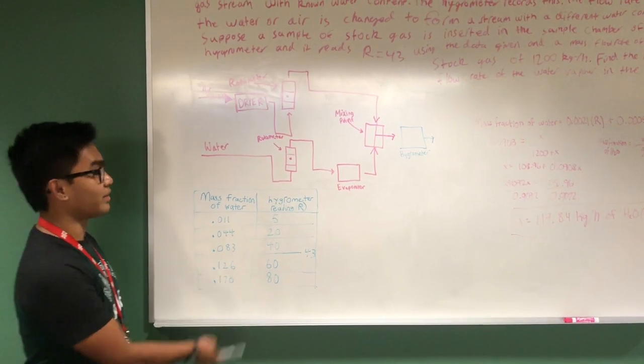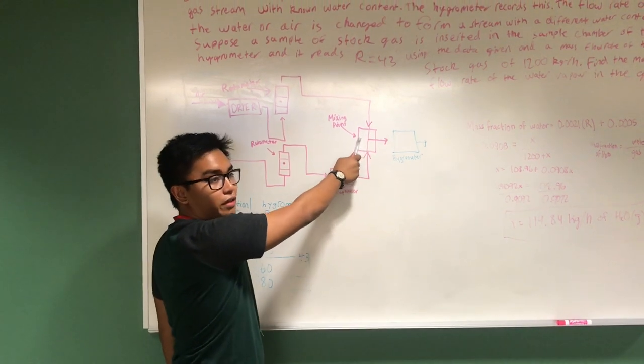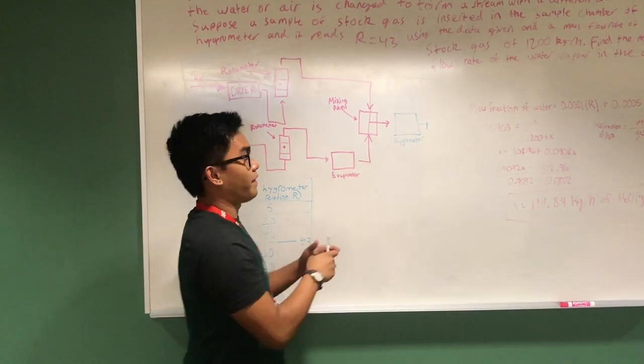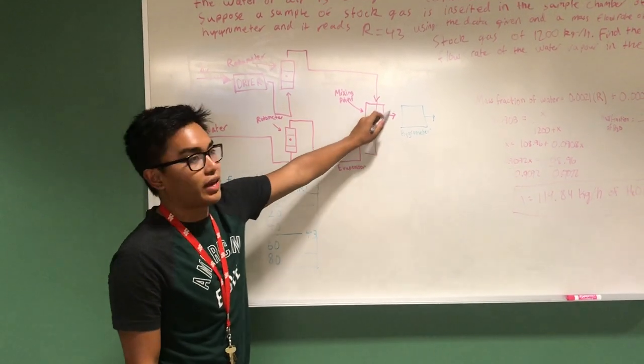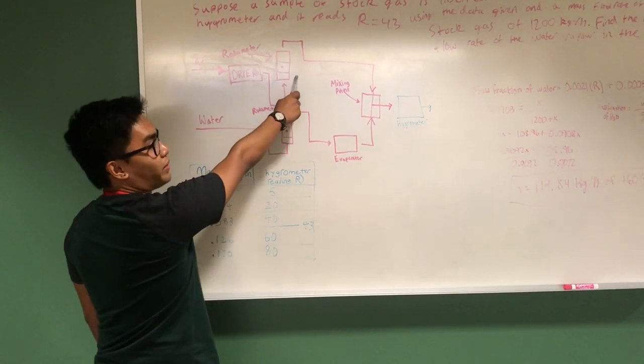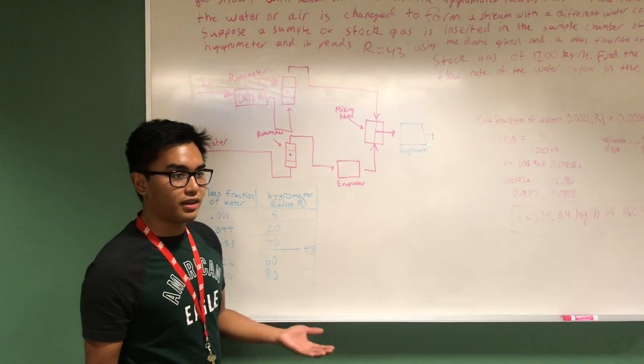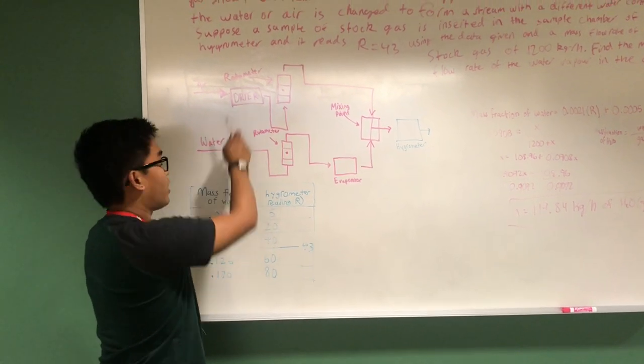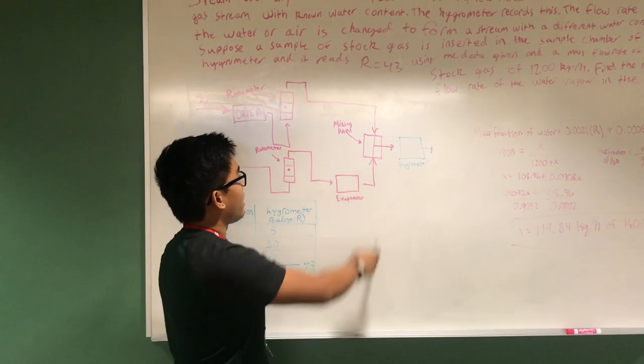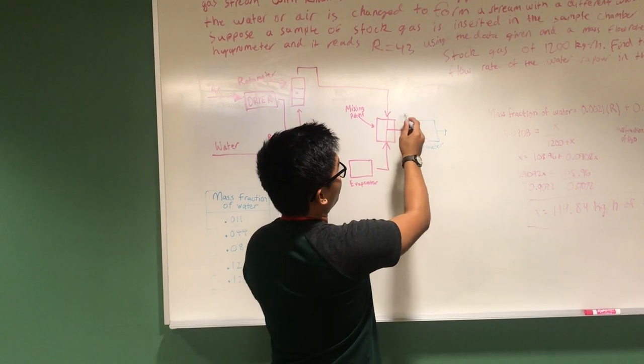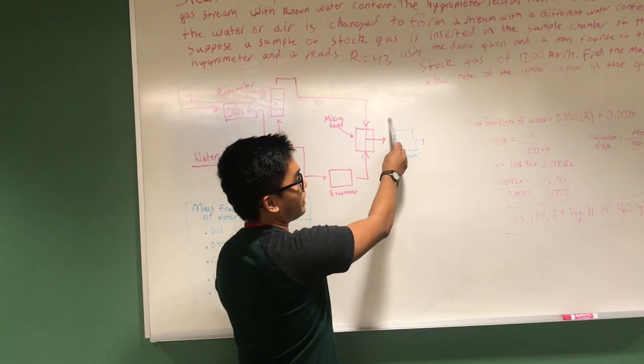I'm going to be explaining the diagram that we have. Right here in this top system we have air going through this whole system to this point. Although the problem doesn't show it, there's a box right here which is the mixing point of air and water to create the gas. These rotometers measure mass flow rate, and the evaporator and dryer change the air to dry air and the water into gas so they can mix. When they're mixed right here we get the stock gas rate of 1200 kg per hour, and this gives us the hygrometer reading of r equals 43.